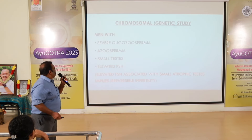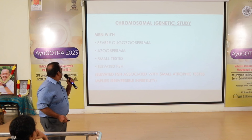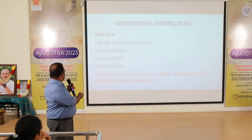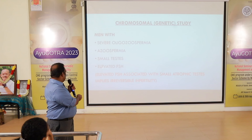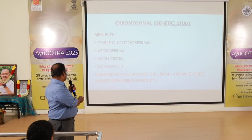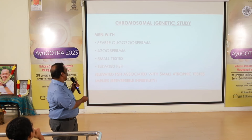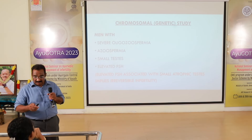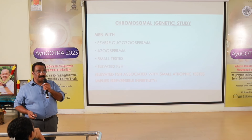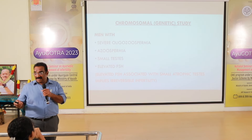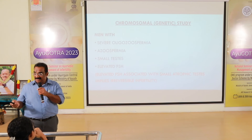Chromosomal and genetic study is indicated in men with severe oligospermia, azoospermia, small testis, and elevated FSH. Elevated FSH associated with small atrophic testis implies irreversible infertility. Chromosomal study is done to rule out Klinefelter syndrome.